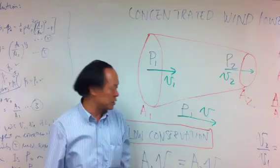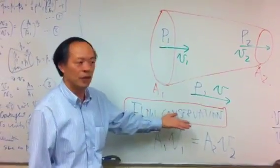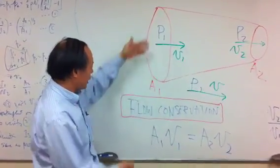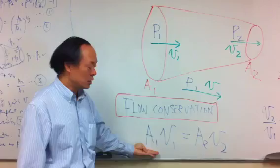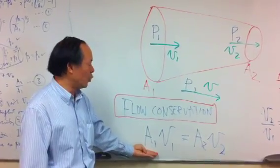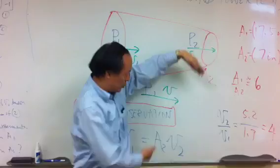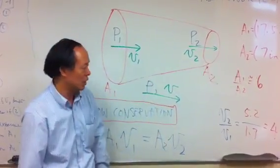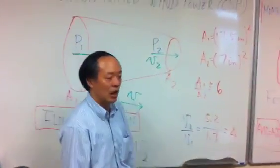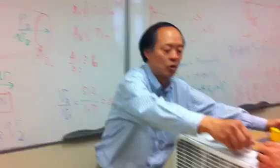The first principle I'd like to explain is the conservation of flow, which means that at the input you have a flow which is A1 times V1 equal to the amount of airflow at the output which is A2 times V2. So we're going to do an experiment to verify this very simple flow conservation.